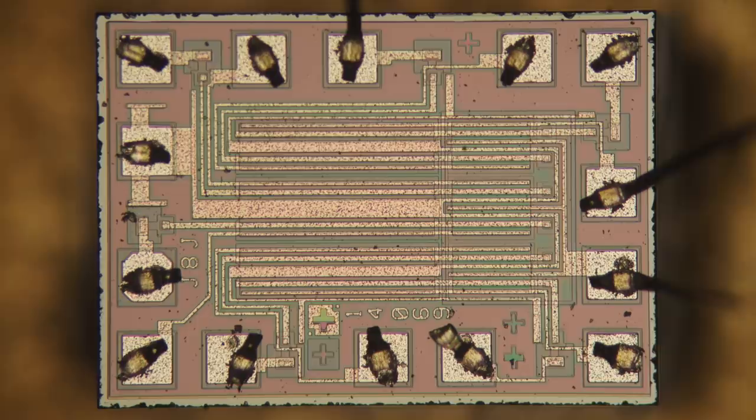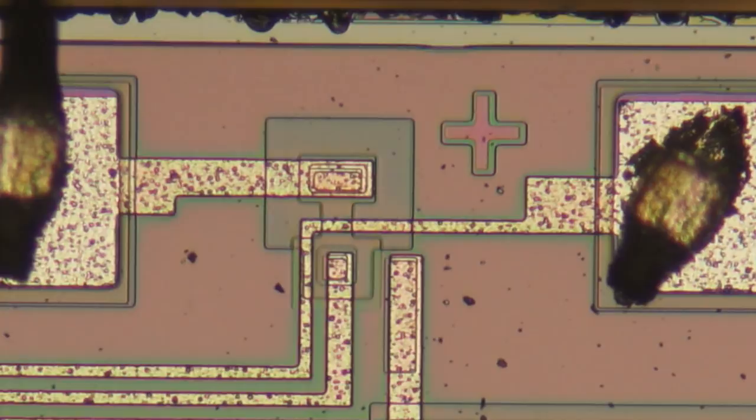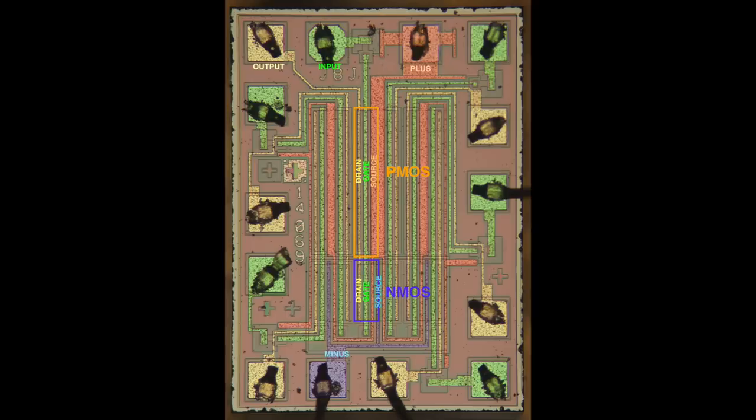The plus signs on the die don't show the positive voltage, the fiducial markers for the alignment of the layers. If you look very closely at the markers, you can see they could have aligned the layers a bit better.